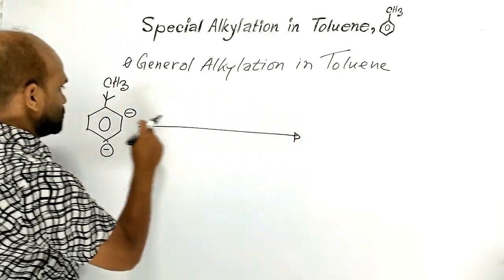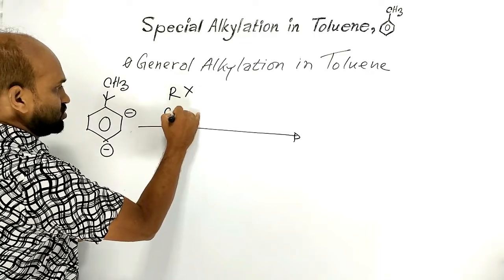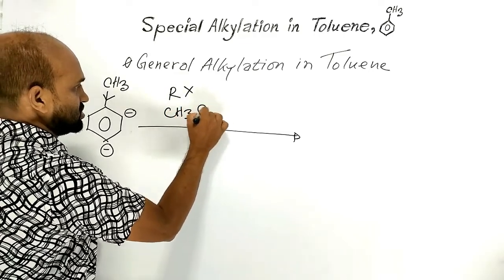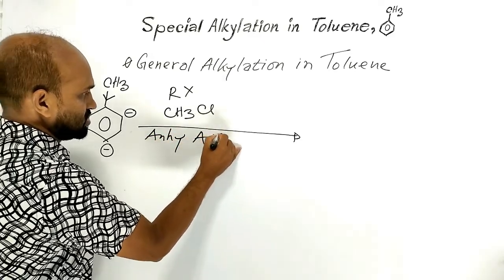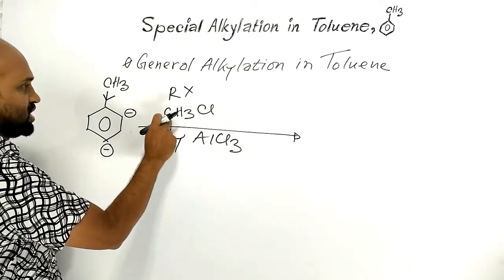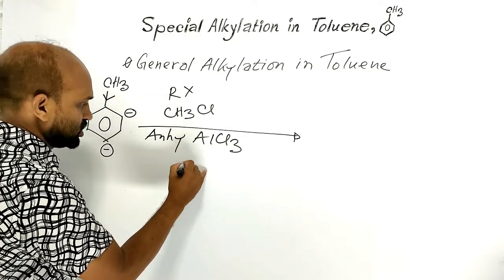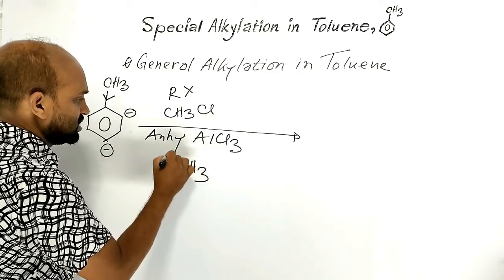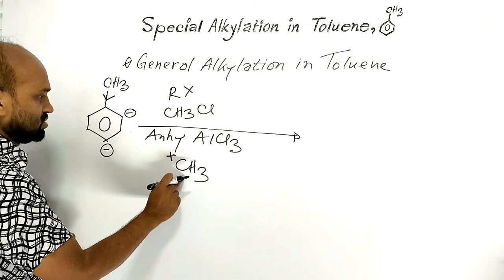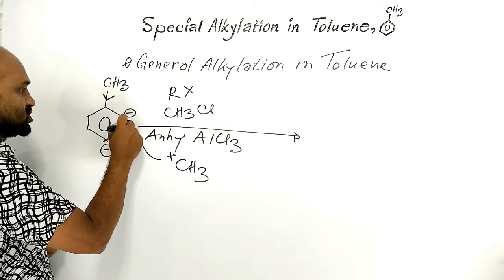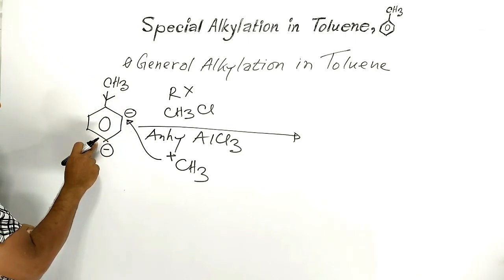When toluene is treated with an alkyl halide like methyl chloride in the presence of anhydrous aluminium chloride, methyl chloride produces a methyl carbocation. This methyl carbocation attacks the electronically rich ortho and para positions to form ortho-xylene and para-xylene.